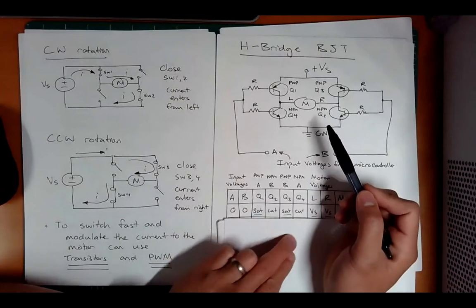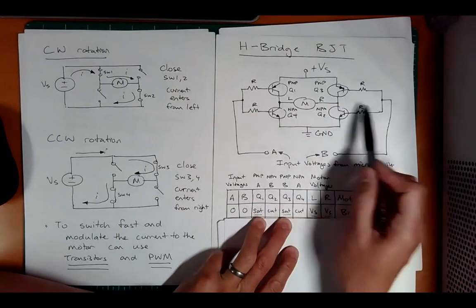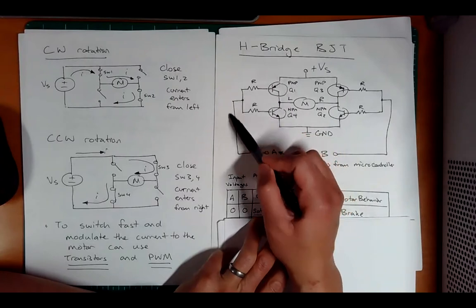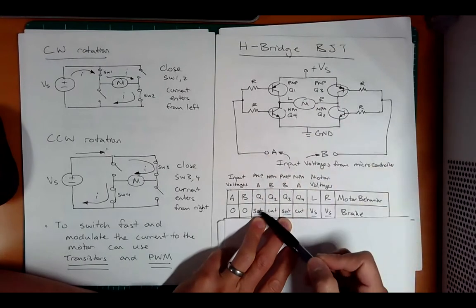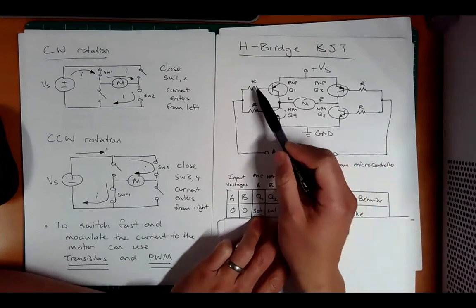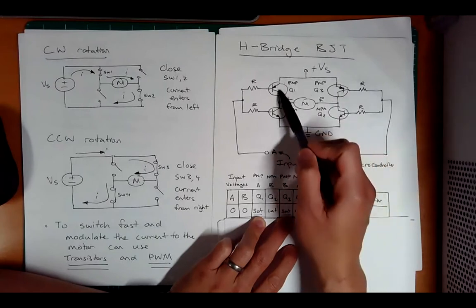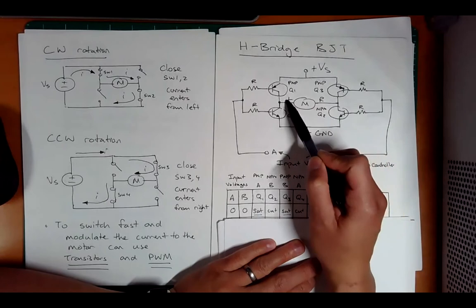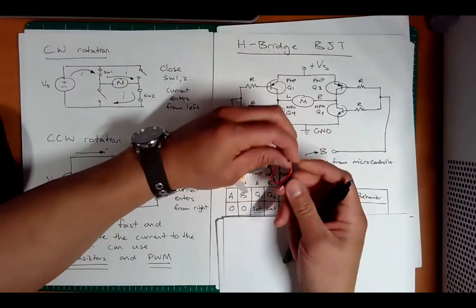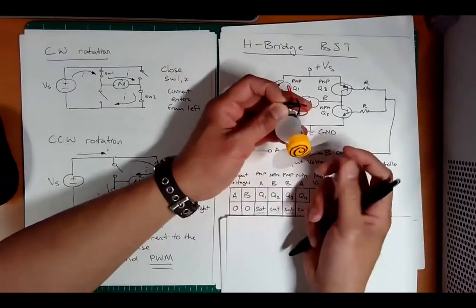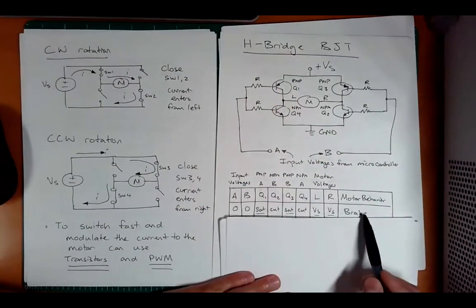I have a table of A, B voltages and the transistors Q1, Q2, Q3, and Q4. Q1 is controlled by A, Q2 is controlled by B, Q3 is controlled by B, and Q4 is controlled by A. I have L and R listed as the left and right voltages of the motor. If I have zero volts and zero volts, the NPNs on both sides should turn off because no current is allowed to go into this base. These are off and off.